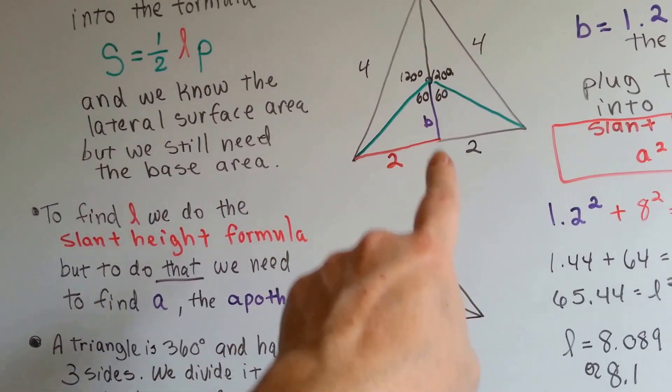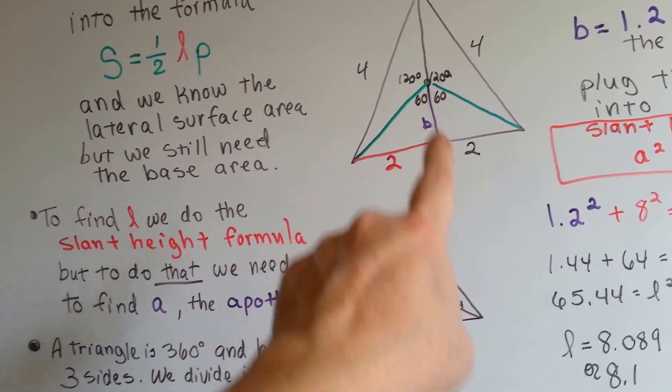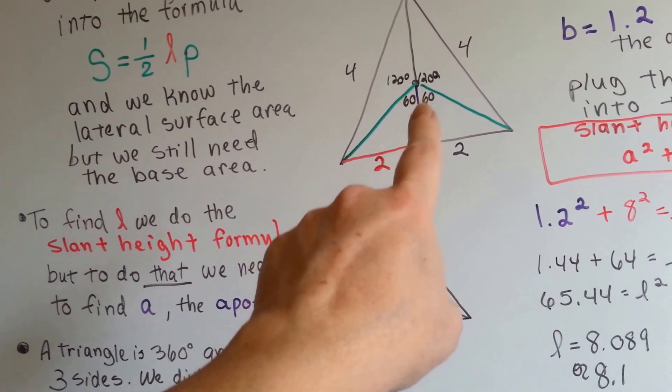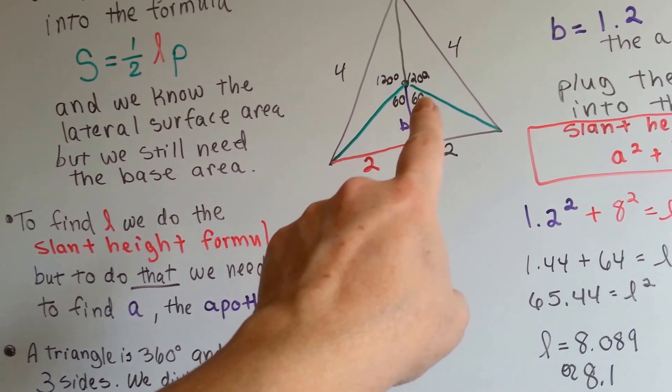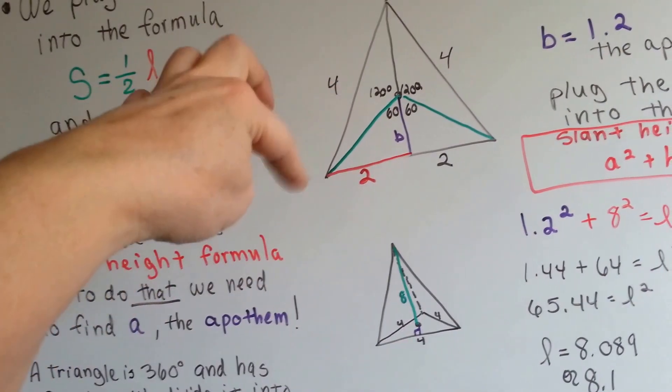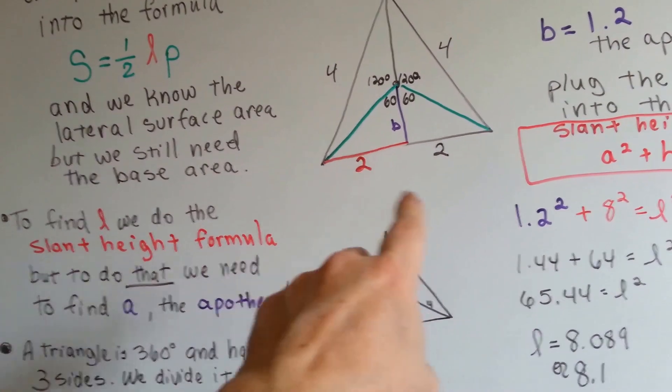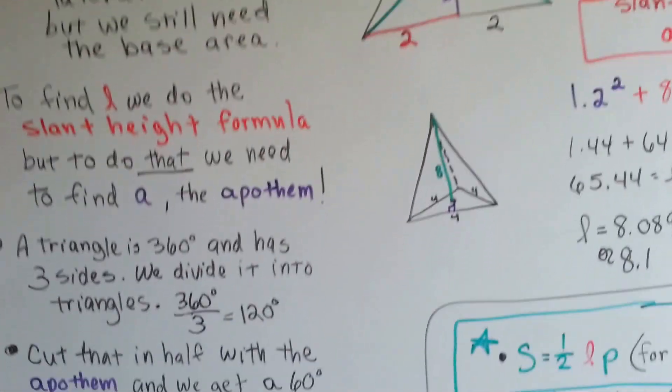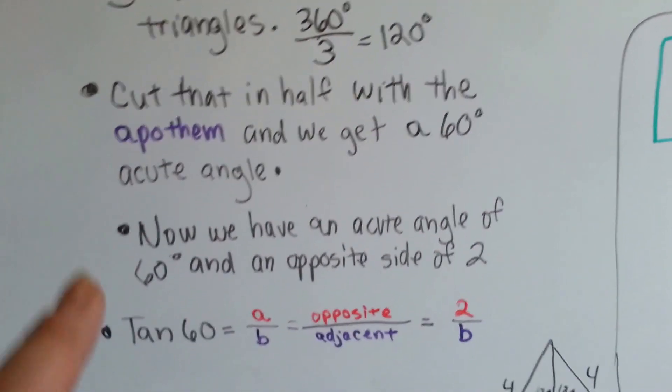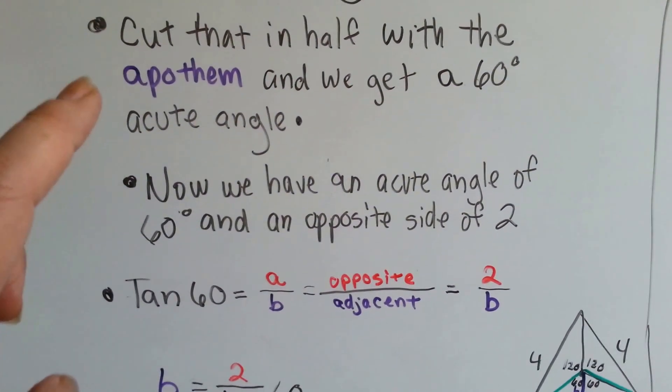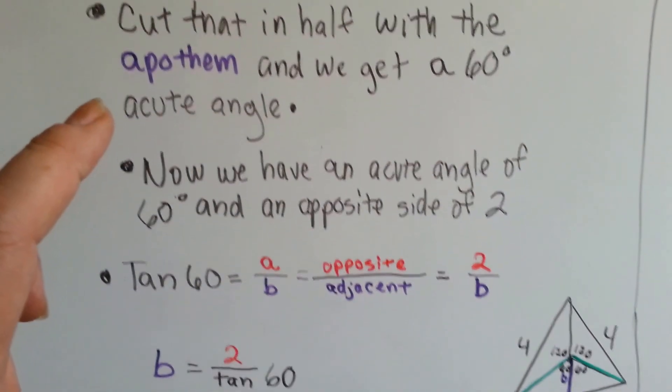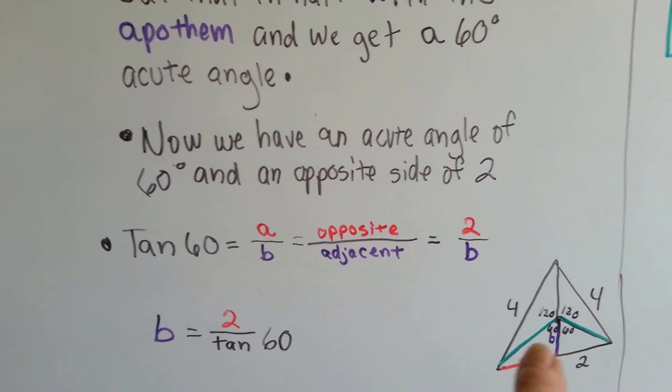This one we cut in half. This is the apothem, b. And because we split this 120, it now became a 60 degree angle and a 60 degree angle. And this side that was 4 inches is now a 2 inch and a 2 inch. So, what we're going to do is we've cut that in half. We've got the apothem and we get a 60 degree acute angle right there.